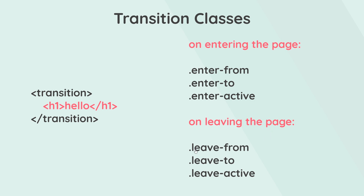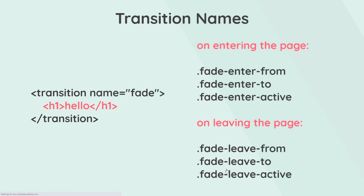We also have three other classes for when the element leaves the page: leave-from, leave-to, and leave-active. Leave-from is the state before it exits the page, leave-to is where we want it to end up, and leave-active controls the transition timing and easing. We can also add a name prop to our transition component — for example calling it 'fade' — and Vue will append this to our transition classes, meaning we can have multiple transitions on a page each with unique classes and CSS properties.